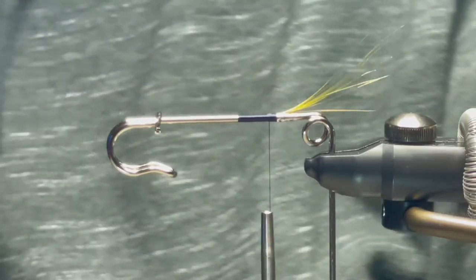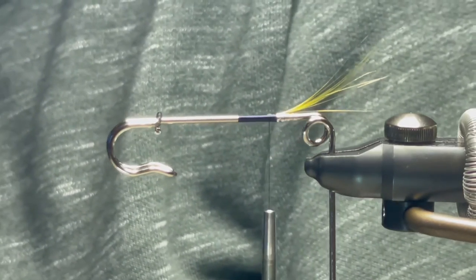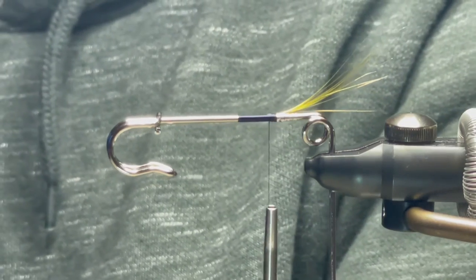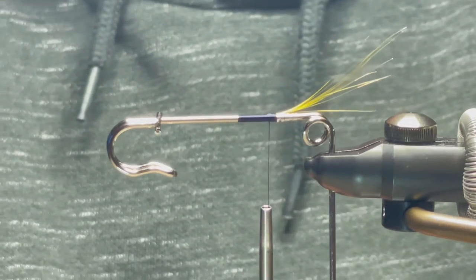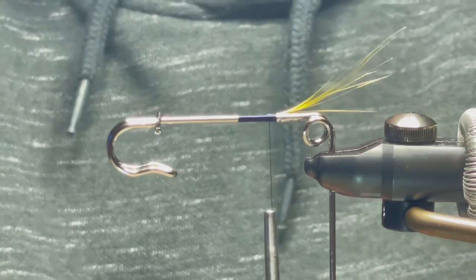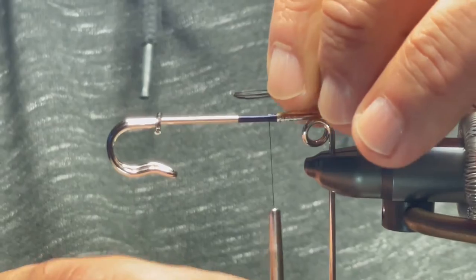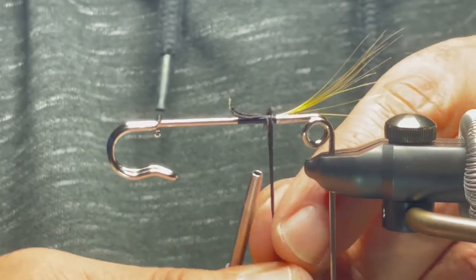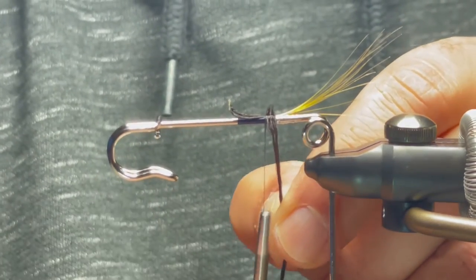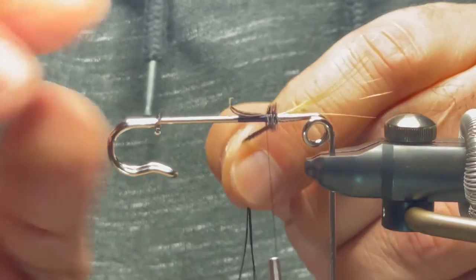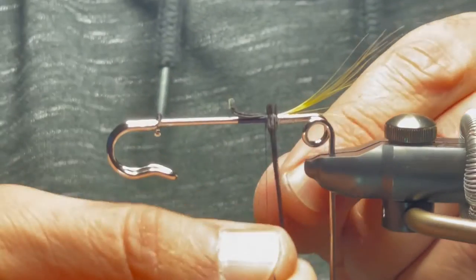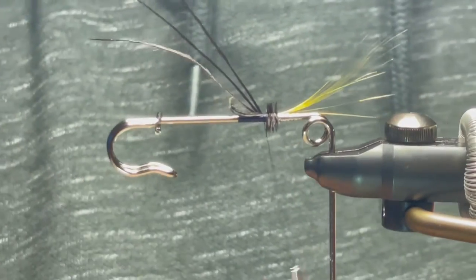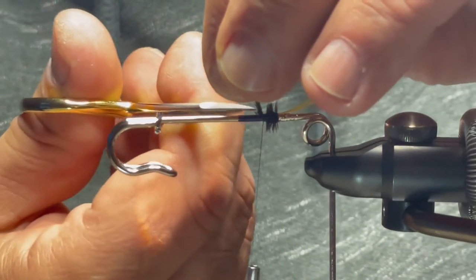And now, we are going to add in some ostrich herl. I'm going to grab about three pieces here. Tie that in. Now, I'm just going to wind these three. Sometimes I use just one. It's a smaller fly. But because this is a pin, I'm using three pieces. Tie that in. Secure that.